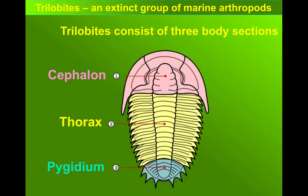The Cephalon is the trilobite's head. This is where, if it had eyes, these were located, and where the animal's central nervous system is found. The Thorax is an articulated set of sections which could move to allow the trilobite to swim or to roll into a ball to protect itself.